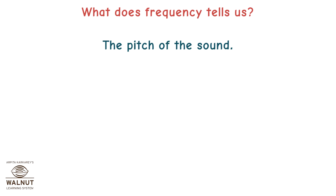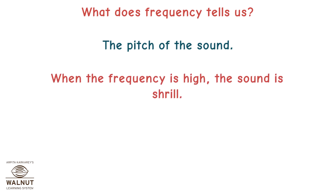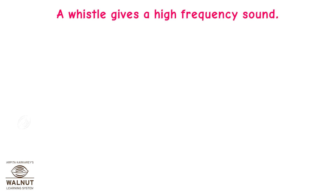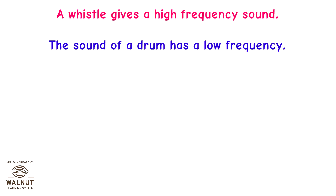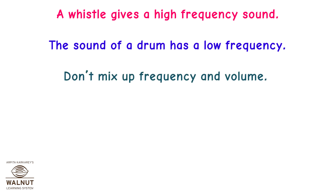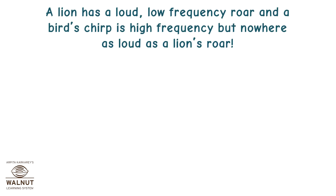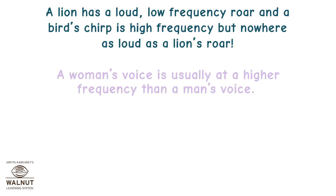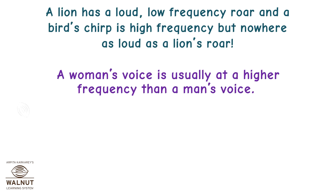What does frequency tell us? The pitch of the sound. When the frequency is high, the sound is shrill. A whistle gives a high frequency sound, while the sound of a drum has a low frequency. Don't mix up frequency with volume — a lion has a loud low frequency roar, and a bird's chirp is high frequency but nowhere as loud as a lion's roar. A woman's voice is usually at a higher frequency than a man's voice.